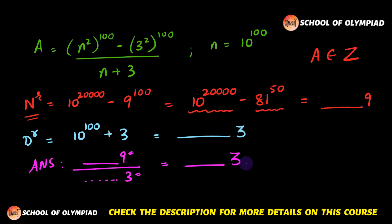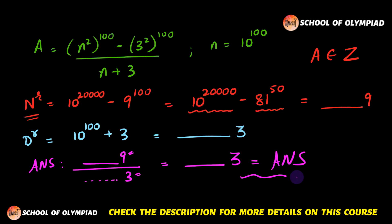So the unit's digit of our expression is 3, and that is the answer to this question. I hope you have understood everything taught in this video. Thank you.